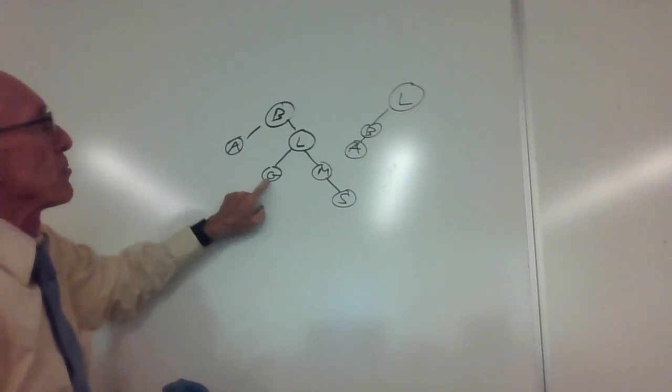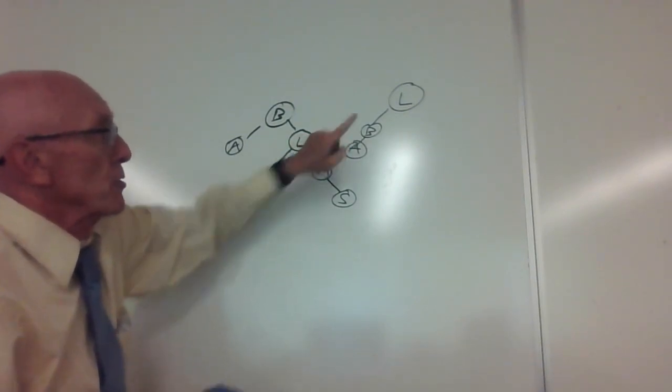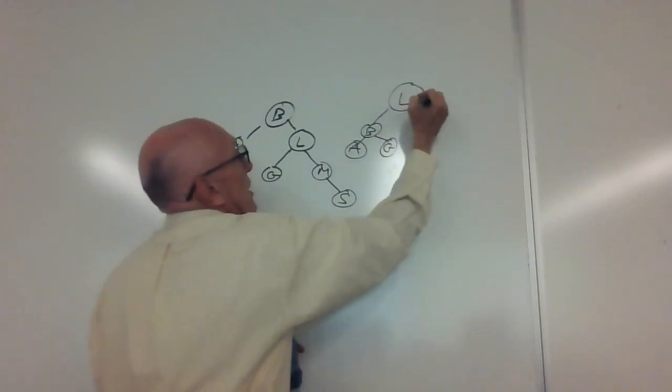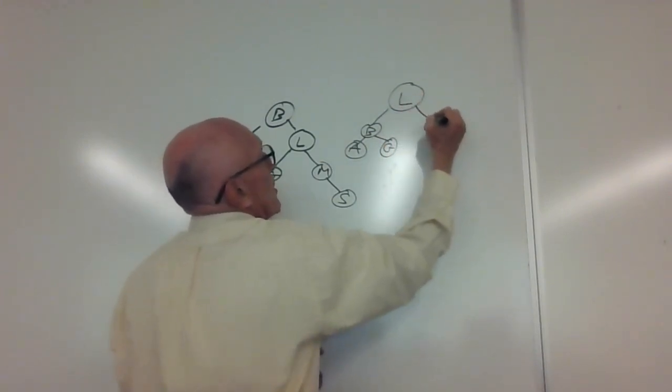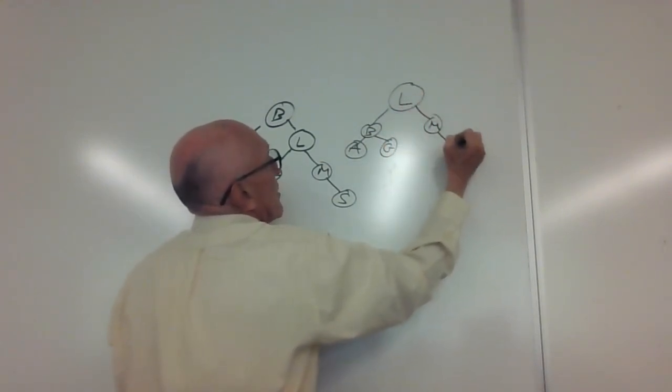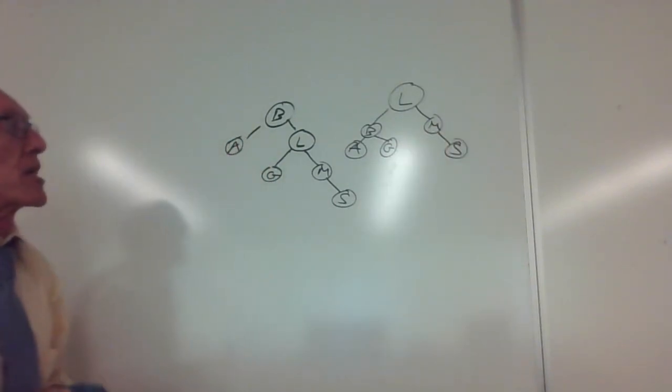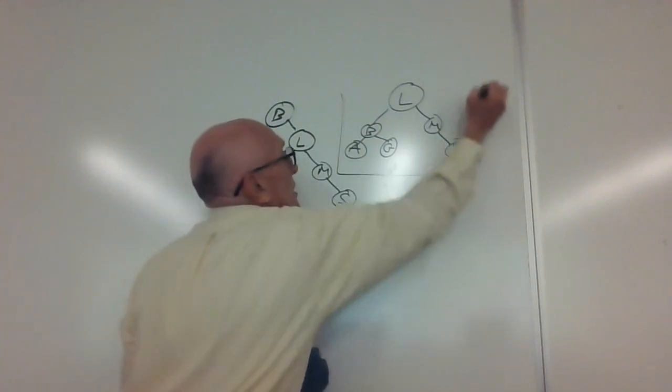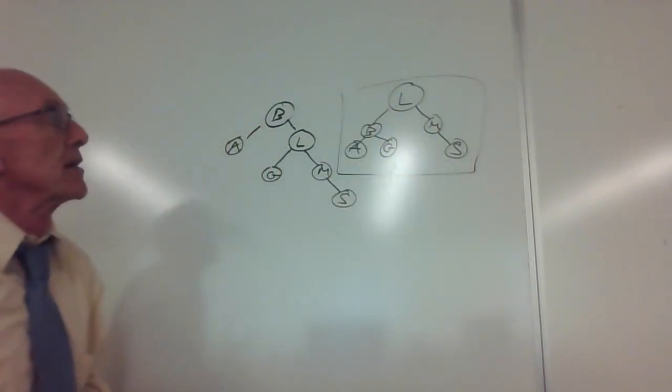The G is going to become the right child of this new node here, and then we have our M and our S. Those remain unchanged. And now we're back in balance, and that is our final balance tree.